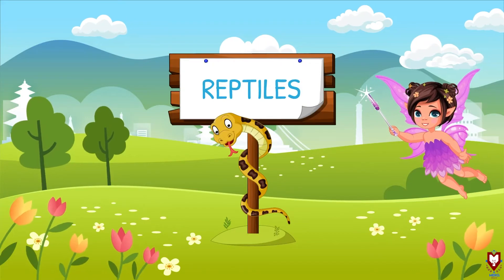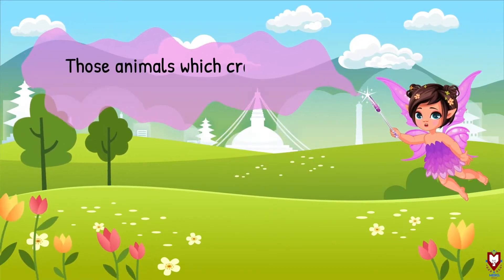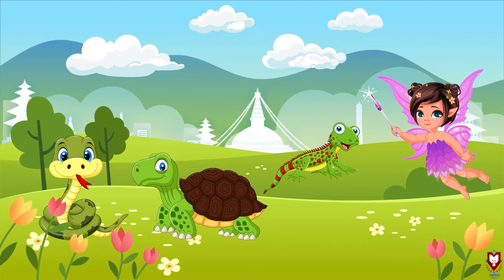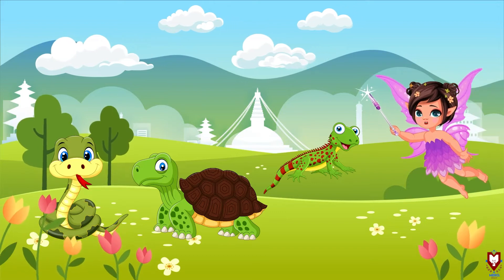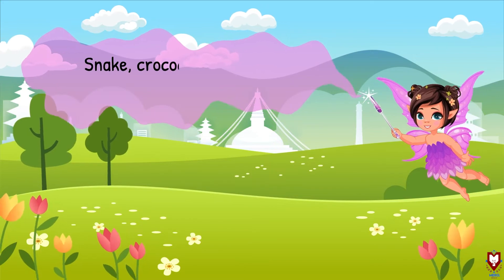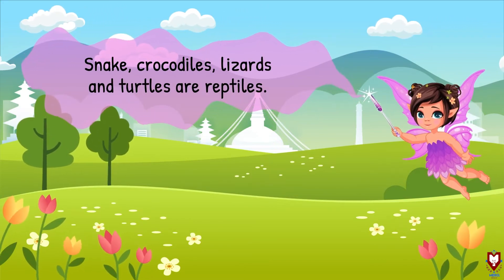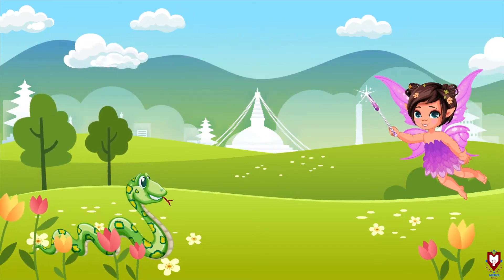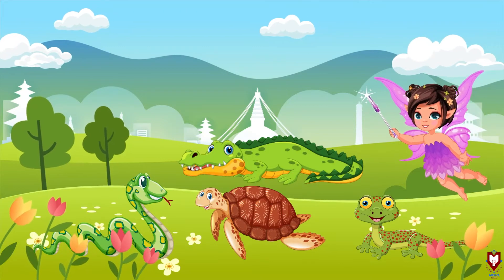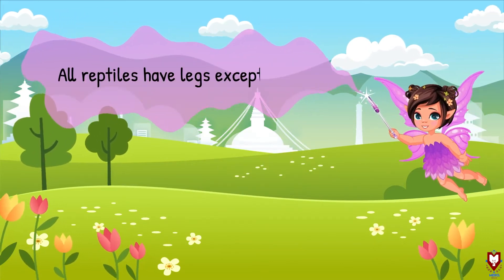The next one is reptiles. Those animals which crawl on the land are called reptiles. Snakes, crocodiles, lizards, and turtles are reptiles. All reptiles have legs except the snake.